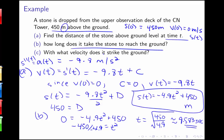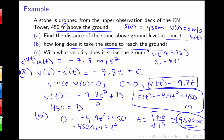If we want to know the velocity at which the stone strikes the ground, we plug t equals 9.583 into v of t equals negative 9.8t. This gives approximately negative 93.915 meters per second. It makes sense that the velocity is negative since the stone has downward velocity as it's moving toward the ground.